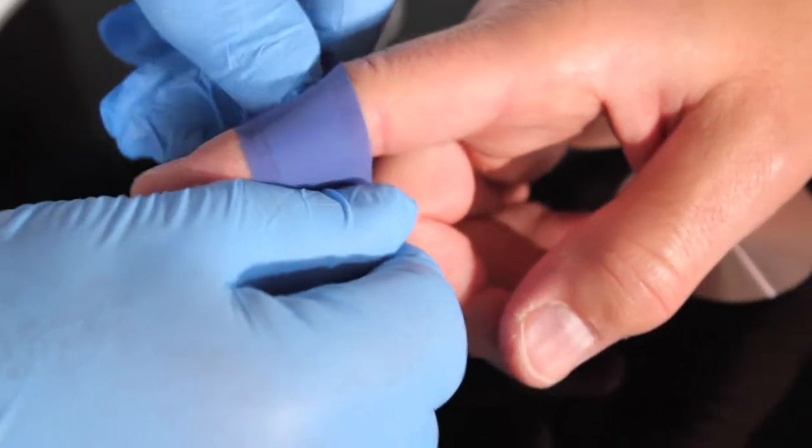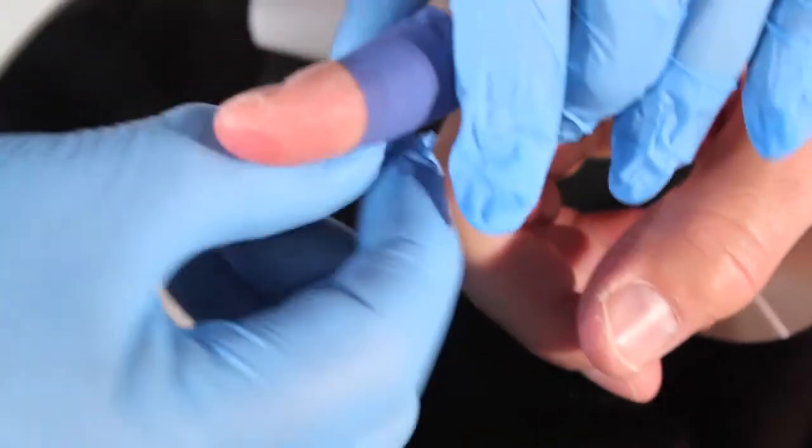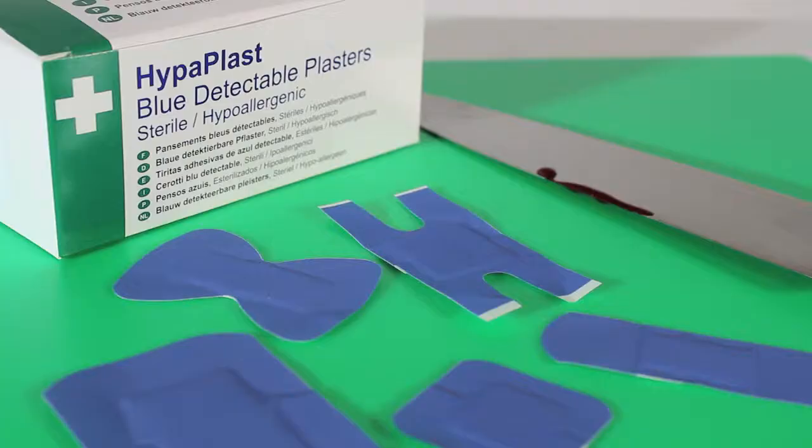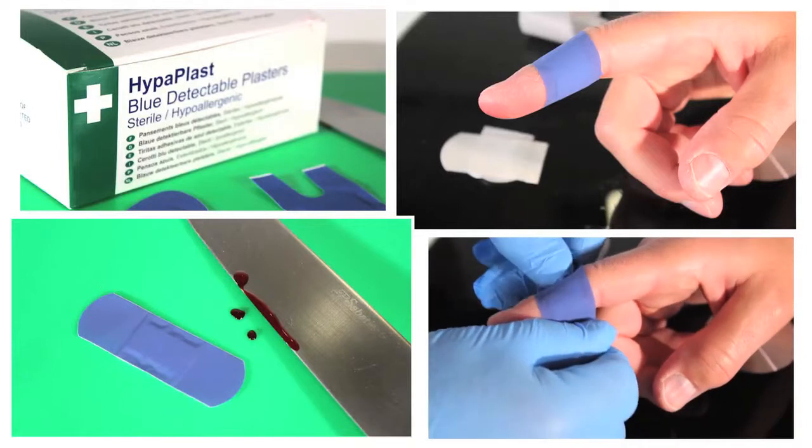Plasters are the most used first aid item in the food industry. Hyperplast blue detectable plasters are both visually and ferrous metal detectable.